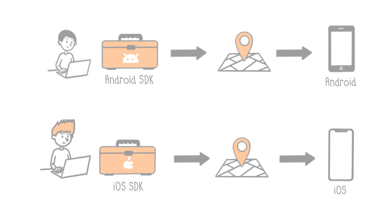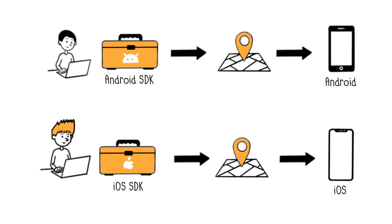A software development kit is provided by an organization to assist developers in creating applications on their platform. For instance, the iOS Mobile SDK provides various tools for creating applications for iPhones, while the Android SDK allows development for Android applications.